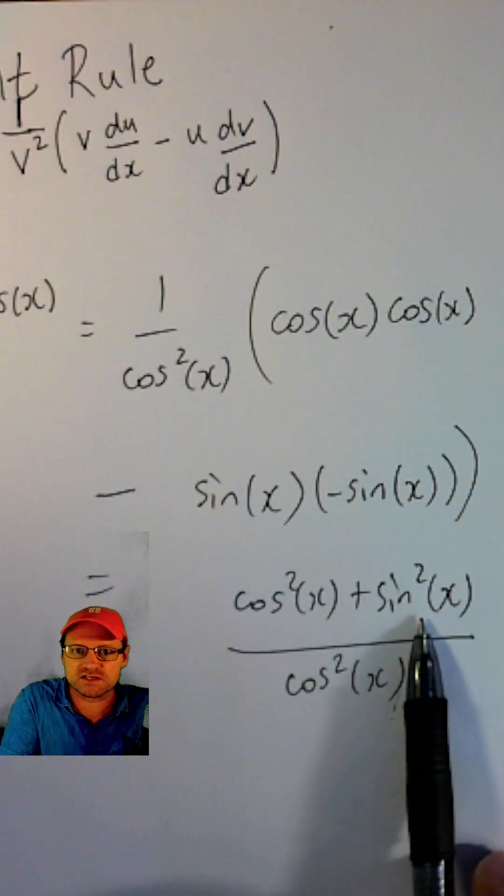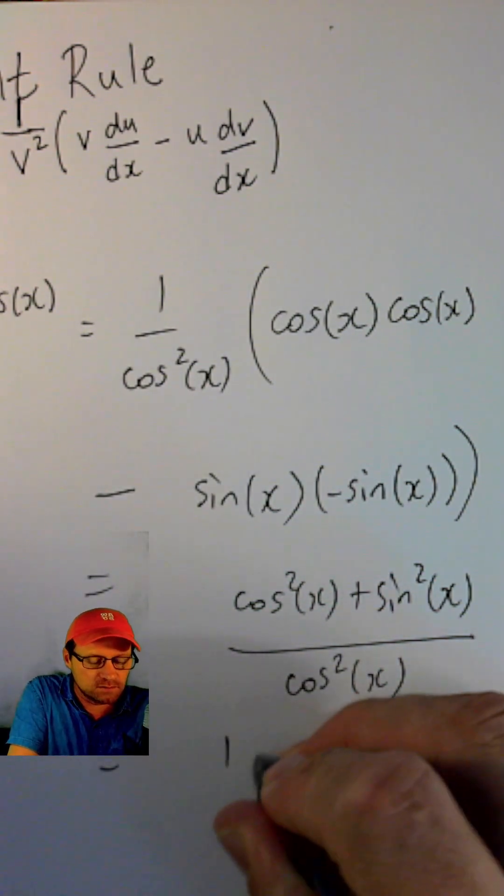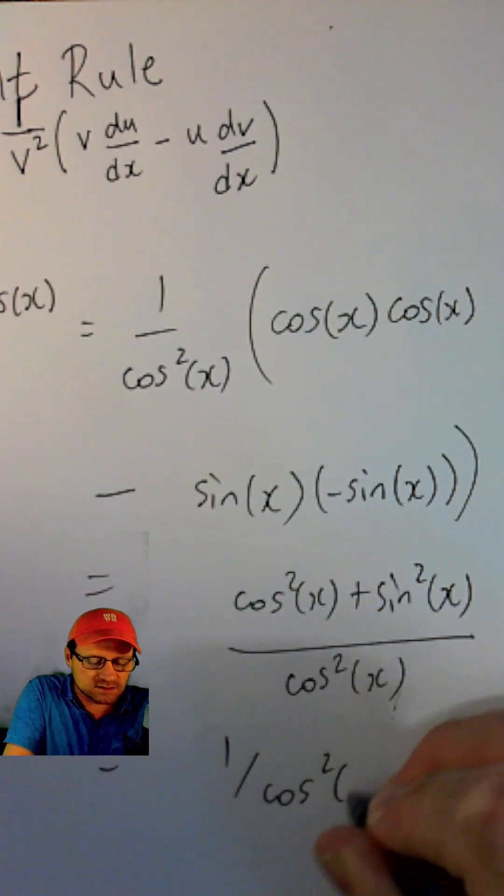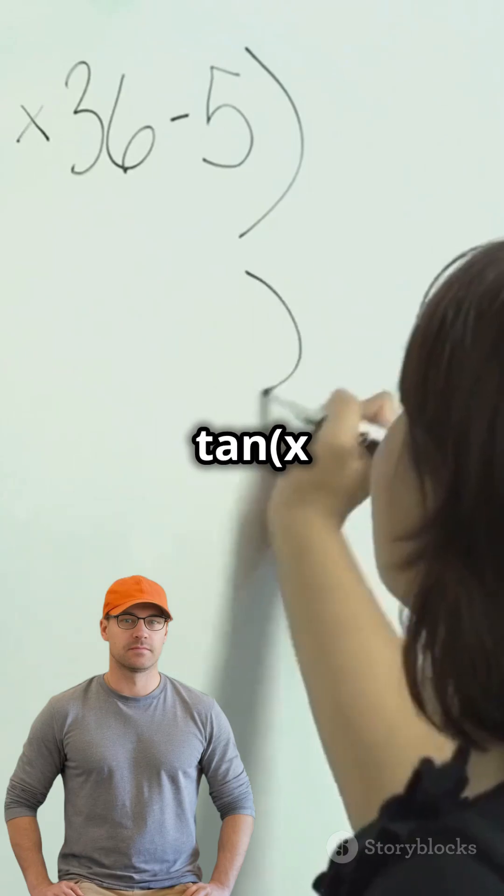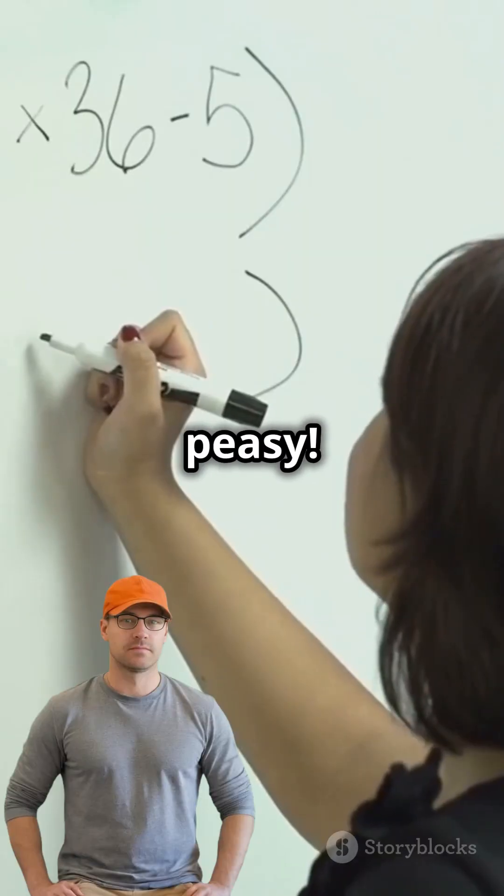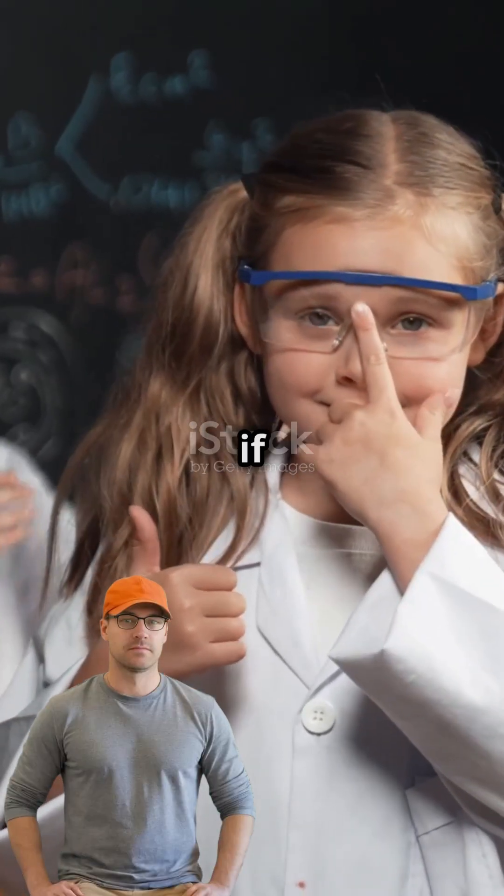Now cos squared plus sin squared is 1, so we have 1 over cos squared x. So the derivative of tan x is sec squared x. Easy peasy. Hit that like button if you found this helpful.